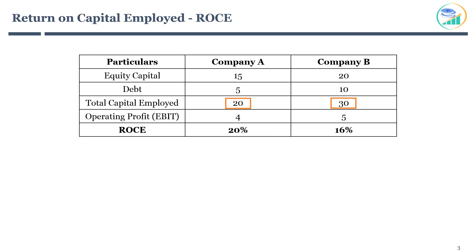Company A has 4 crores of operating profit and company B has 5 crores respectively. Computing ROCE now: company A has a ROCE of 20%, while company B has a ROCE of 16%. You would notice company B has lower ROCE despite having higher operating profit. This is because the capital employed by company B is much higher than company A.